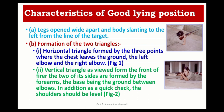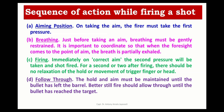The lying position is considered the best position for NCC cadets. The legs are to be placed opened apart and the body slanting to the left from the line of target. Two triangles are formed — one between the arms and the body. The vertical triangle, viewed from the front of the firer, has two sides formed by the forearms with the base being the ground between the elbows. As a quick check, the shoulders should be level. While firing a shot, the sequence of action is: aiming position, controlled breathing, then fire, followed by follow-through.